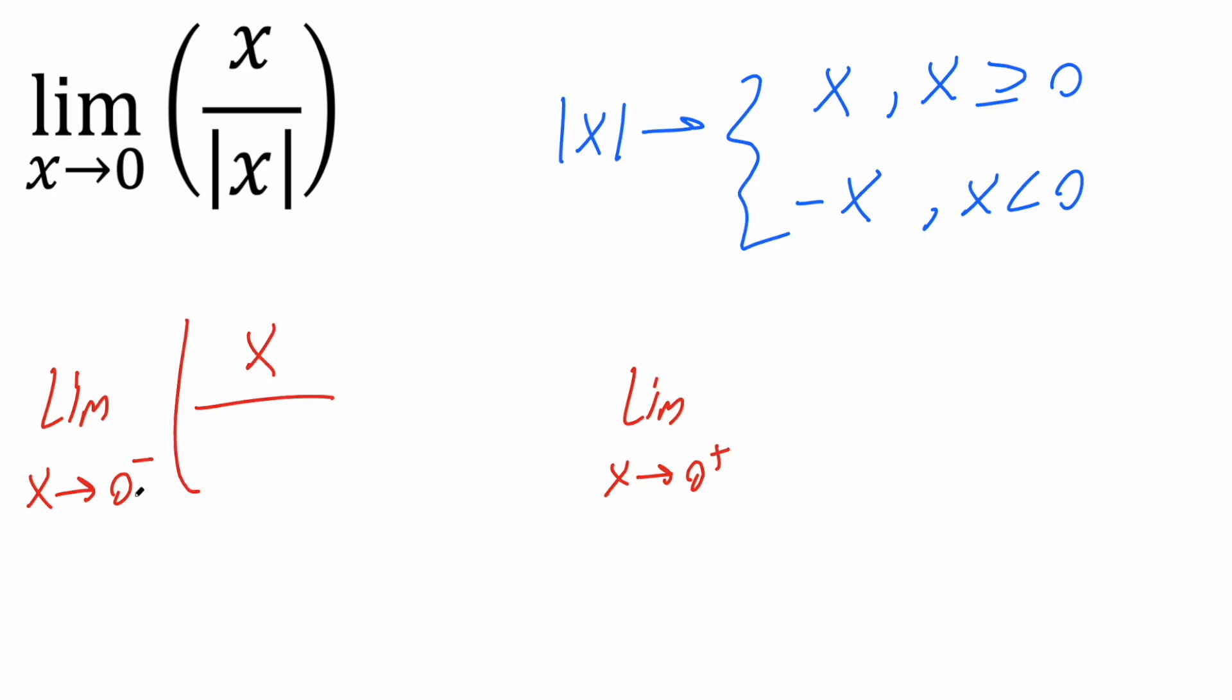So we'll have x divided by, so zero to the left is going to behave like this, so negative x, and zero to the right is going to behave like the top one, so like x. Now the thing is x divided by negative x is going to give us negative one, and x divided by x is going to give us a positive one.